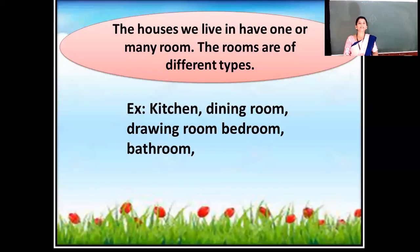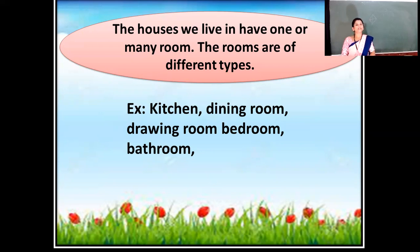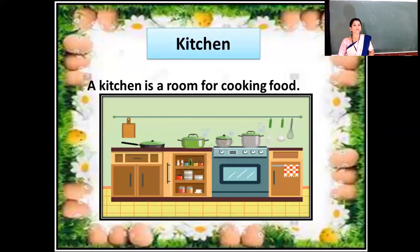The houses we live in have many rooms. The rooms are of different types. The first one is kitchen room. Second one is dining room. Third one is drawing room, also called living room or hall. And then bedroom and bathroom. These are the types of rooms. We will see them one by one.